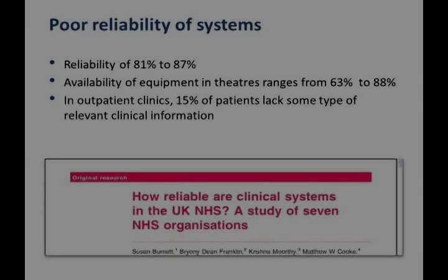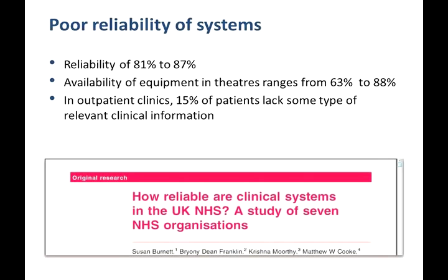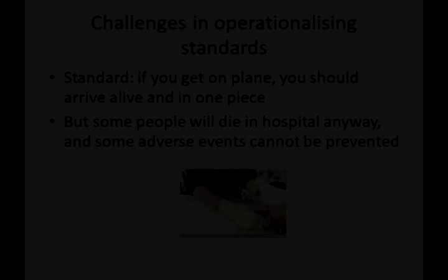I'll give you some examples of the kinds of problems we encounter when trying to provide high quality safe care. One relates to the reliability of healthcare systems. A recent study of seven NHS organisations found that system reliability ranged from 81% to 87%. For example, a doctor attempting an operation in a theatre has only a 63% to 88% chance of the equipment being available — meaning a very high level of unreliability. In outpatient clinics, about 15% of patients lack some kind of relevant clinical information.